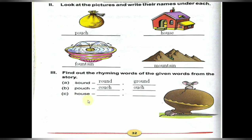Next one: house. Rhyming word — mouse. One more rhyming word — blouse, B-L-O-U-S-E. Rhyming words understood: sound, round, ground; pouch, couch, ouch; house, mouse, blouse.